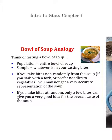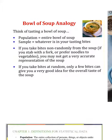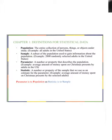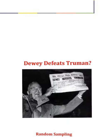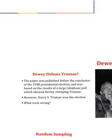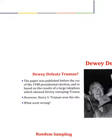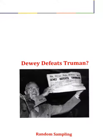An example of where the sample is not representative of the population is this headline: 'Dewey Defeats Truman.' This was actually in 1948, and this was a large telephone poll. Harry S. Truman actually won the election, so this sample just wasn't representative of the whole population.